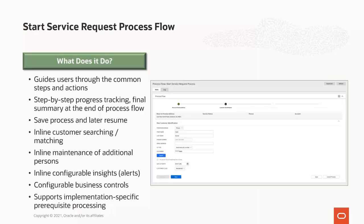The new Start Service Request Process Flow capability helps call center agents process start service requests efficiently in a consistent manner by guiding them through the common steps and actions for starting service. Here are some of the major highlights of the new capability. There is a visual representation at the top of the process flow screen so a call center agent can easily see how far along they are in a process flow.